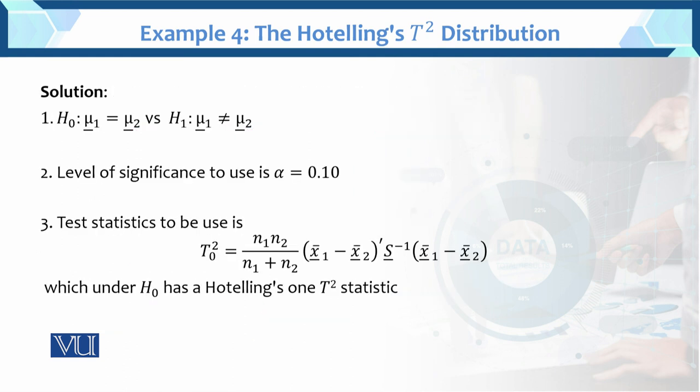Now the solution: we know that hypothesis testing has six steps. Step 1 is construct the hypothesis. We have the null and alternative hypothesis. Second step is the level of significance, here alpha equals 10 percent. Third step is the test statistic. This is the test statistic of two-sample Hotelling's T-square.